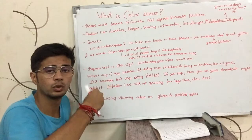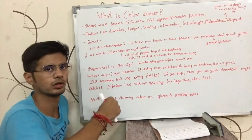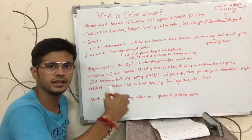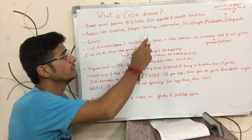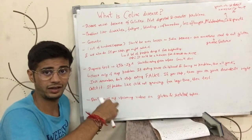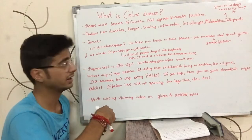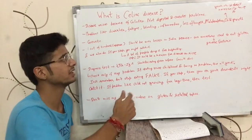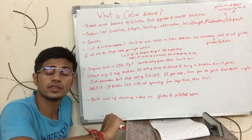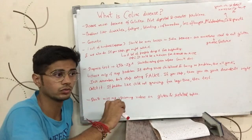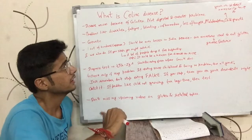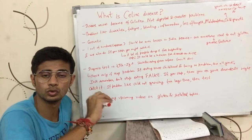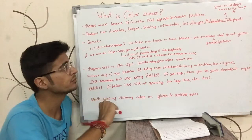In celiac disease, gluten is not digested and it creates problems in your body. You can face diarrhea, fatigue, lack of energy, bloating, a buildup of gas in your belly area, abdominal pain, and an inflammatory sensation. You might face loss of appetite, and you might not be able to digest or absorb your food properly — which is malabsorption.